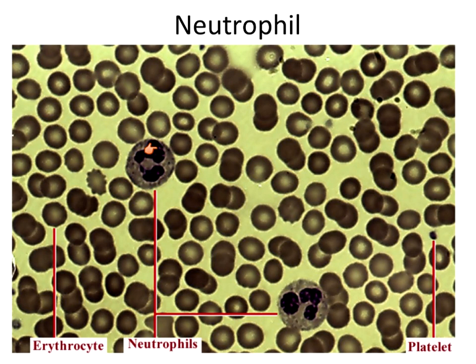The most abundant of your white blood cells are going to be neutrophils. If we were to look at this under a microscope slide, you're going to mostly see neutrophils — about 60% of your white blood cells are going to be neutrophils. If we were doing a differential count, you would count the number of white blood cells out of 100, then count how many neutrophils you saw, how many eosinophils, monocytes, et cetera, and get a percentage.